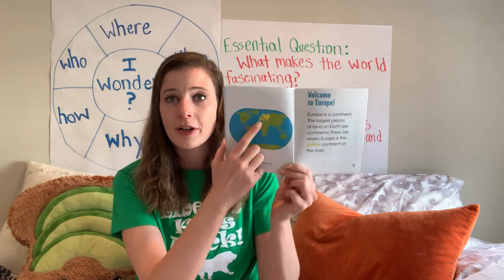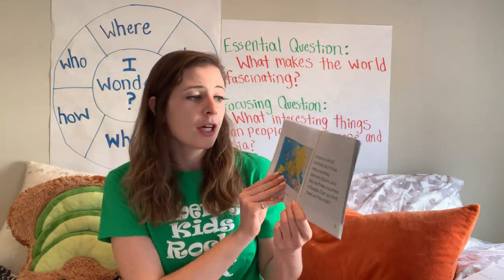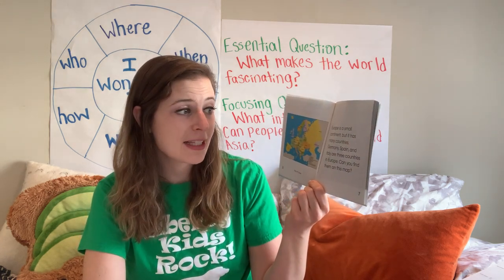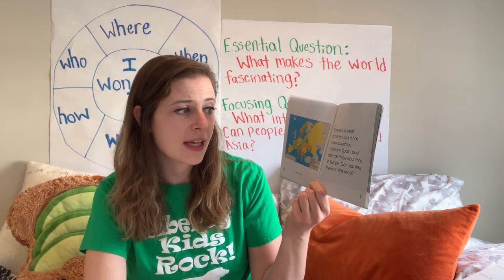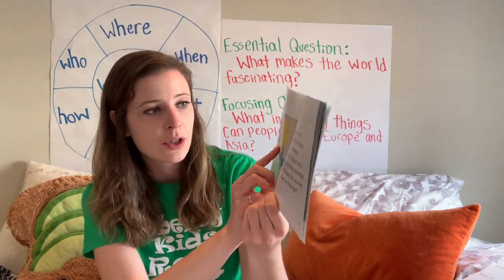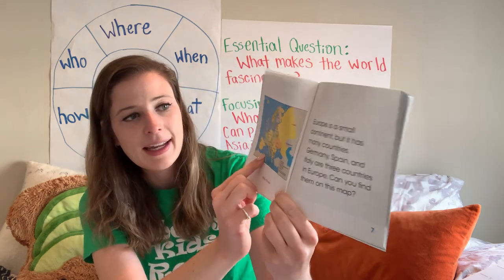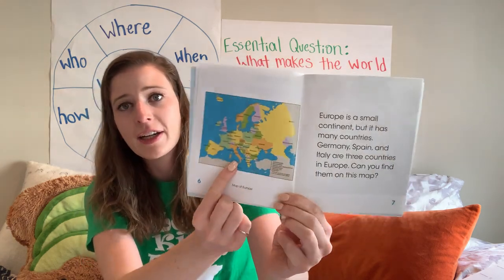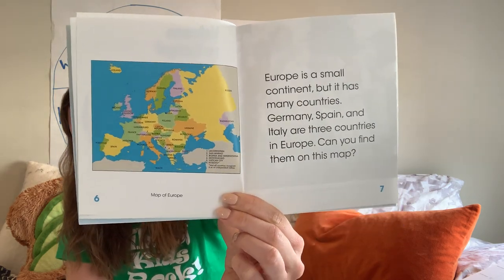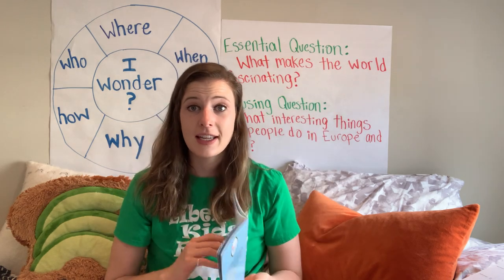Europe is a small continent, but it has many countries. Germany, Spain, and Italy are three countries in Europe. Can you find them on this map? Germany is right here, Spain is right here, and Italy is right here. Italy — some people say it looks a little bit like a boot. There are a lot of different countries in Europe.